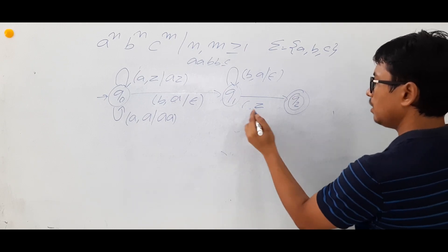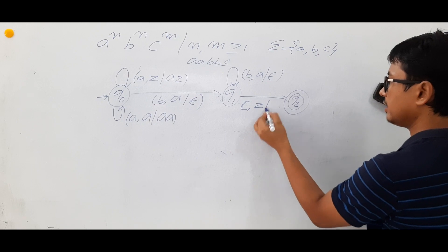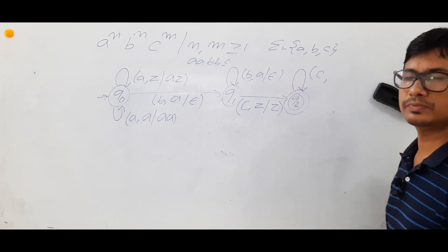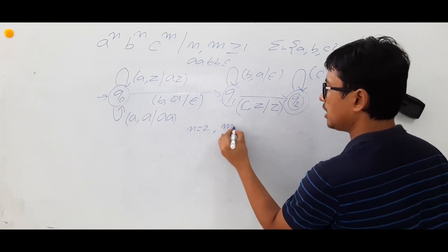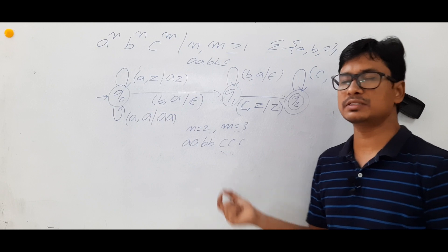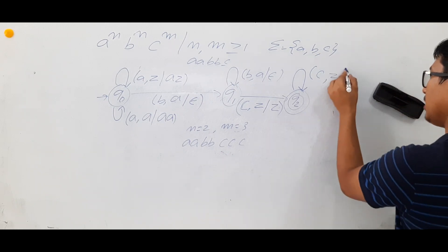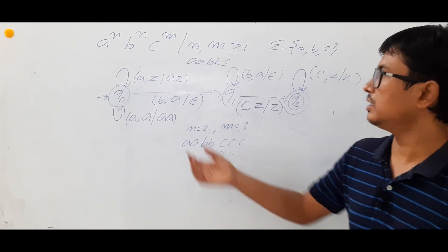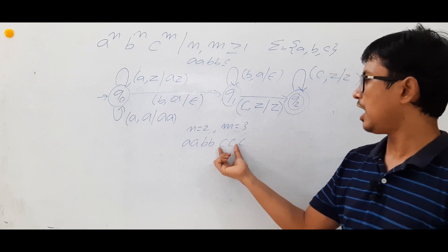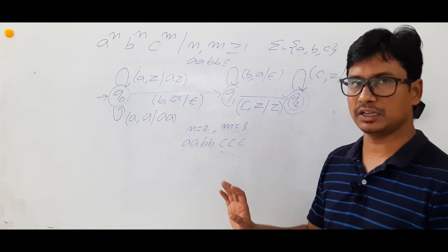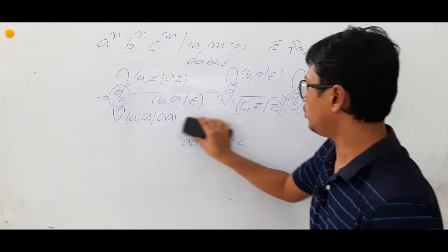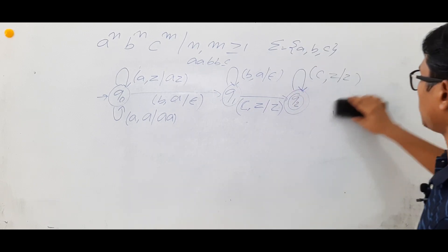I reach state q2 and make it a final state. When I see input 'c' and stack symbol is Z, I keep it as Z and accept. There is a chance of more than one c — for example n=2, m=3 gives 'a a b b c c c'. So from q2 on input 'c' with stack Z, I keep Z and stay in q2, accepting. To summarize: push for a's, pop a's for b's, and when seeing c's with Z on the stack, accept.